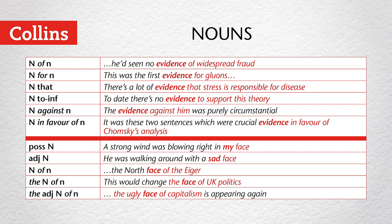The north face of the Eiger needs the of+N, so the pattern is N+of+N. And the final very specific example is the adjective+N+of+N pattern, as in the ugly face of capitalism.